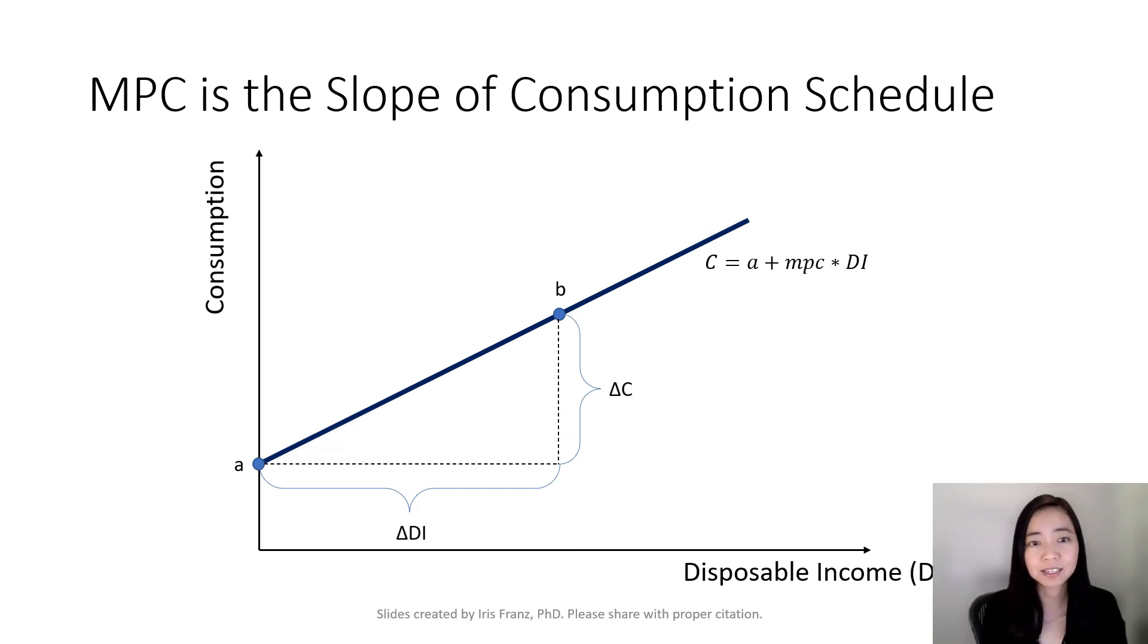How is that? Notice that here we have point A moving to point B. And you can see that from point A to point B, our consumption has increased by the changing consumption, delta C. Our disposable income has increased by delta DI. And the slope is exactly the rise over the run, which is delta C divided by delta DI, meaning the changing consumption divided by changing income. And that is the definition of MPC.